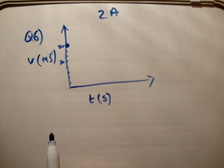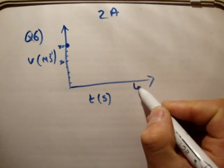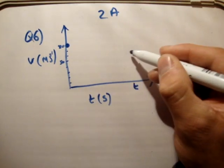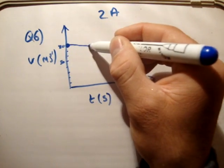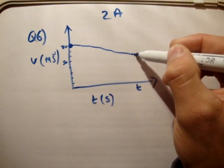And we know that at another time, we don't know what the time is, at a time t, the velocity, the speed is now 50 meters per second. And because it's uniform acceleration or deceleration, we can draw the two of those by a line.